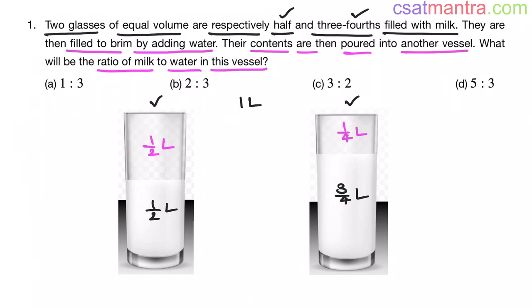Now how much total milk we have in these two glasses? One by two liters plus three by four liters. LCM is four. Two plus three, this is five by four liters. So five by four liters of milk is there.